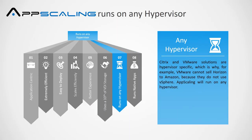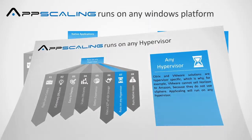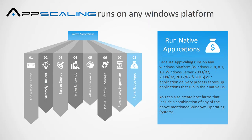App Scaling runs on any hypervisor. Citrix and VMware solutions are hypervisor-specific — which is why VMware cannot sell Horizon to Amazon because they do not use or support vSphere. App Scaling will run on any hypervisor. Because App Scaling runs on any Windows platform — Windows 7, 8, 8.1, 10, Windows Server 2003 and R2, 2008 and R2, 2012 and R2, and 2016 — it serves up applications that run in their native OS.